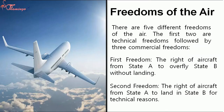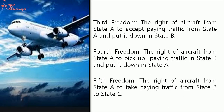There are five different freedoms of the air. The first two are technical freedoms, followed by three commercial freedoms. First freedom: the right of aircraft from state A to overfly state B without landing. Second freedom: the right of aircraft from state A to land in state B for technical reasons. Third freedom: the right of aircraft from state A to accept paying traffic from state A and put it down in state B. Fourth freedom: the right of aircraft from state A to pick up paying traffic in state B and put it down in state A. Fifth freedom: the right of aircraft from state A to take paying traffic from state B to state C.